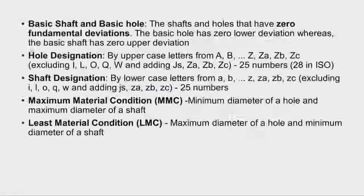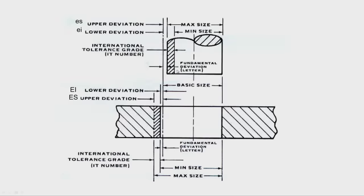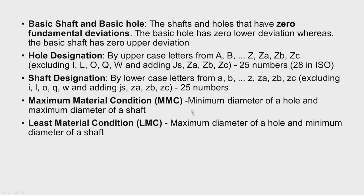Basic shaft and basic hole are shafts and holes that have zero fundamental deviation. If the fundamental deviation is zero, the basic size of the hole equals the maximum size of the shaft — that is the basic shaft. For the basic hole, if the fundamental deviation is zero, the basic size equals the minimum size of the hole. The basic hole has zero lower deviation, whereas the basic shaft has zero upper deviation.